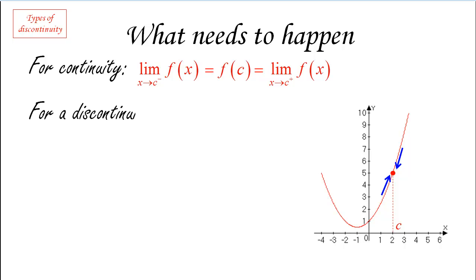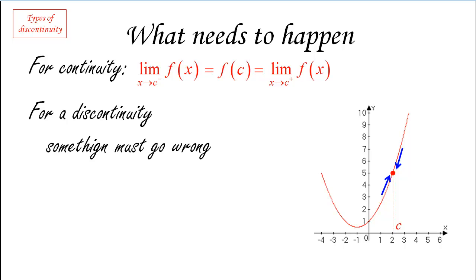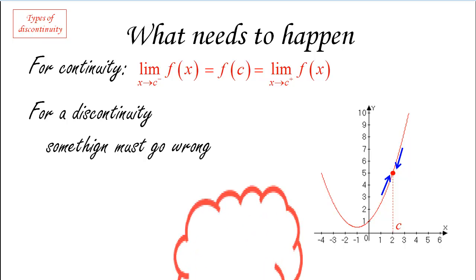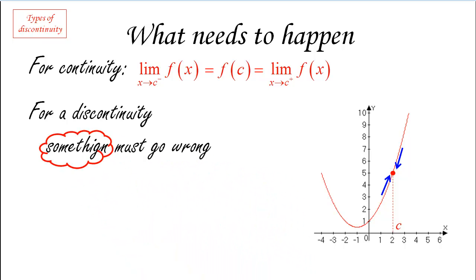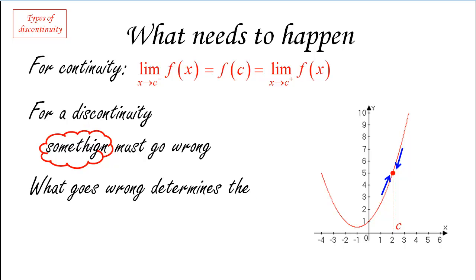For discontinuity to occur, something must go wrong with the formula for continuity. Depending on what goes wrong, we can identify what kind of discontinuity we have. What goes wrong determines the type of the discontinuity.